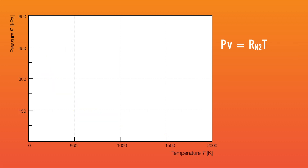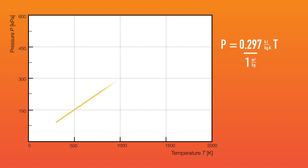Next, let us see how pressure and temperature are related. We divide our ideal gas law on both sides by specific volume, then keep the R divided by specific volume quantity constant and vary the temperature. Selecting 1 meter cubed per kilogram for specific volume, we get a linear relationship between pressure and temperature. The line here is a constant specific volume line called an isochore. It is telling us that if we change nitrogen's pressure without allowing it to expand or contract, the temperature will also change. We get subsequent specific volume lines by increasing the value to 2, 3, and 4 meter cubed per kilogram.